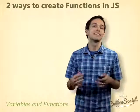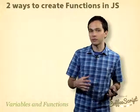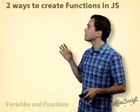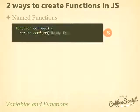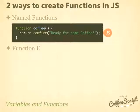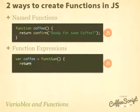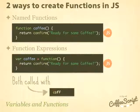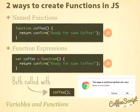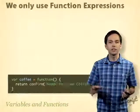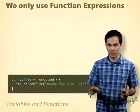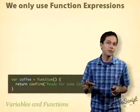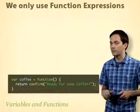There are two different ways to declare functions in JavaScript. The first is by using named functions. Here we're declaring a Coffee function. We can also declare functions using function expressions. Both can be called the same way — just coffee with parentheses and a semicolon. In CoffeeScript, it's only going to create function expressions for us. Let's take a look at the CoffeeScript code that generates that JavaScript.